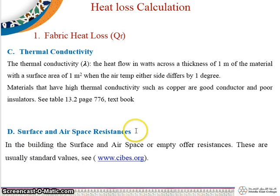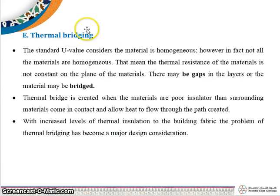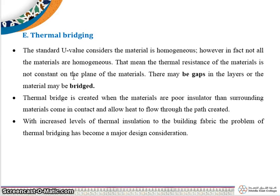Surface and air space resistances — in a building, surfaces and air spaces offer resistances, which are usually standard values. Thermal bridging means when U value calculations consider the material as homogenous; however, not all materials are homogenous. The thermal resistance may not be constant across the plane of the material — there may be gaps in layers or the material may be bridged. A thermal bridge is created when materials that are poorer insulators than surrounding materials come into contact and allow heat to flow through the path created.